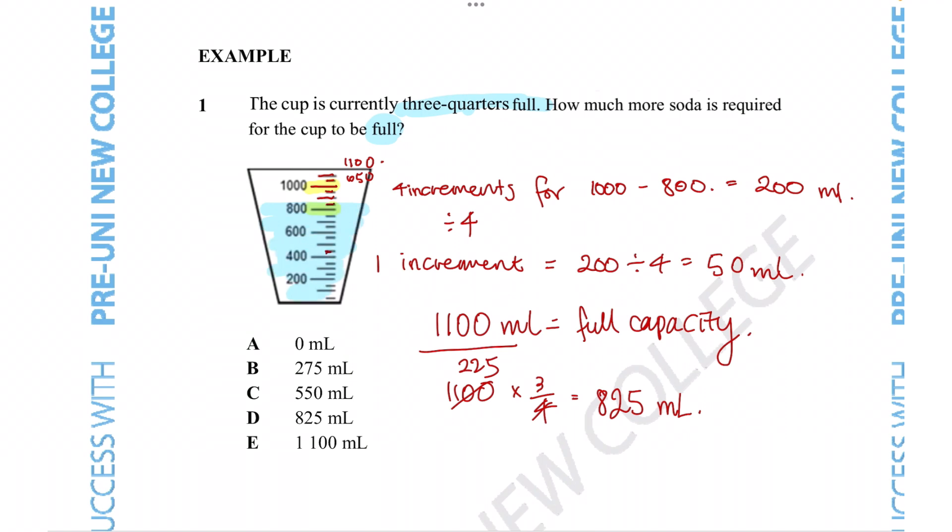And to reach full capacity, we need this much more water. So let's figure out the difference. 1100 minus 825 gives us 275 milliliters left to become full. So the correct response would be option B.